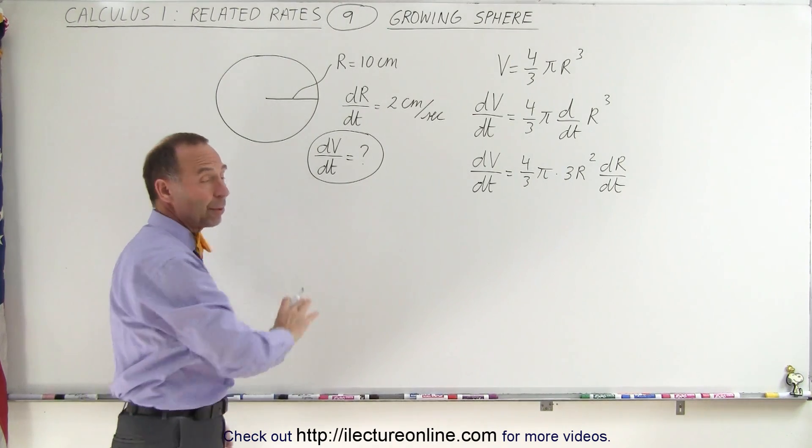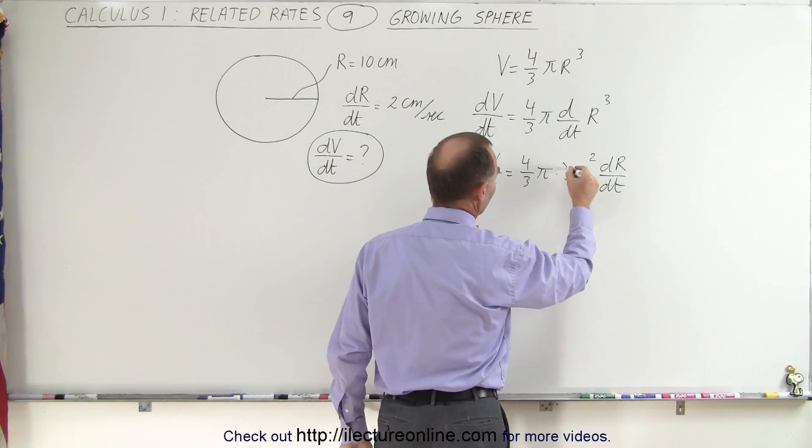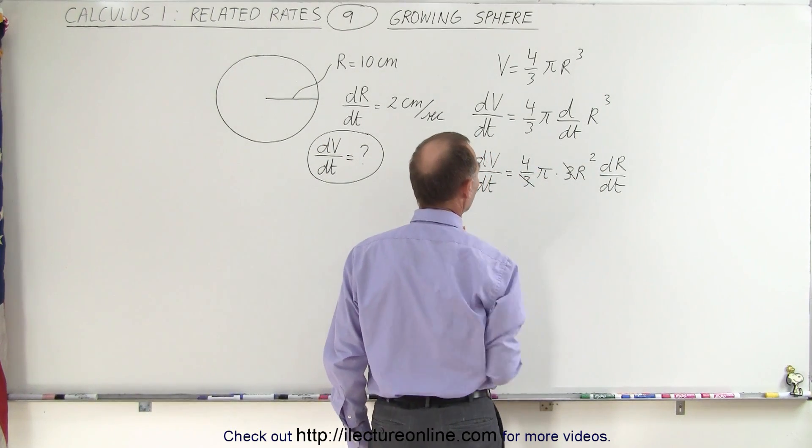Now since we're looking for dV/dt, we already have the equation in the correct format. We can of course simplify this by getting rid of that 3.